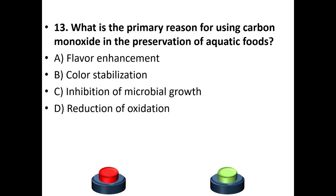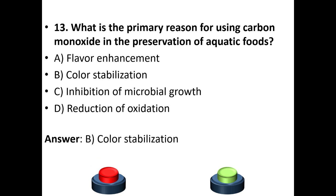Thirteenth question: What is the primary reason for using carbon monoxide in the preservation of aquatic foods? Options: flavor enhancement, color stabilization, inhibition of microbial growth, reduction of oxidation. The answer is option B — color stabilization.